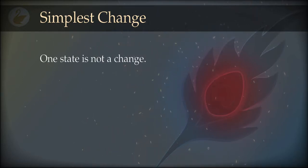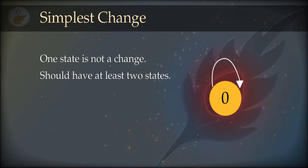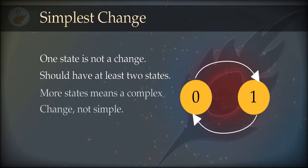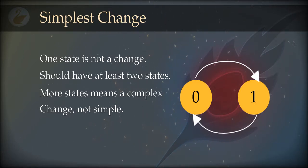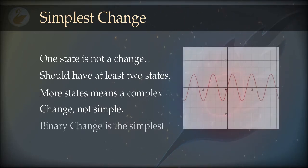The logic says that the simplest change should have at least two states. We must experience two states of anything to call it a change. If the experience remains in one state, or changes into the same state again and again, the comparison in memory will always produce zero change — in other words, we will experience no change. If there are more than two states, we will experience change, but it won't be the simplest change. The simplest change is only two states — not less, not more. This is a necessity, not a choice.